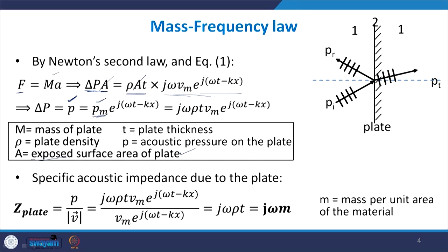The pressure Δp will be of harmonic form: pressure amplitude multiplied by e^(j(ωt − kx)). This gives us the expression p = j·ω·ρ·V_m·e^(j(ωt − kx)). The specific acoustic impedance of the plate is then given by the acoustic pressure acting on the plate divided by the particle velocity. The expressions cancel to give j·ω·ρ·t.